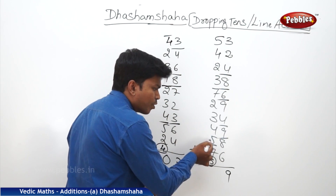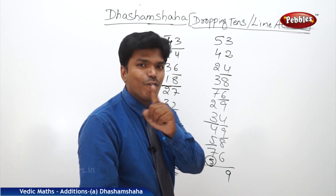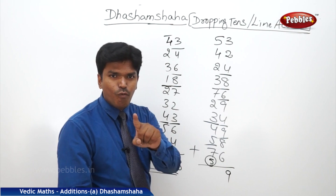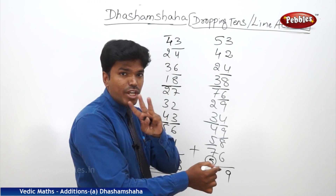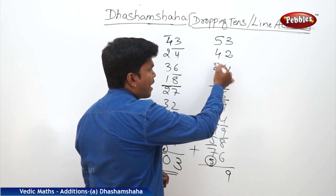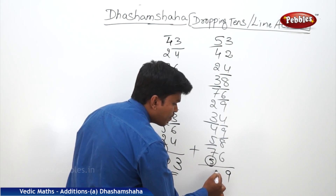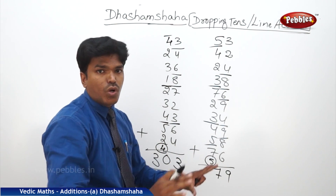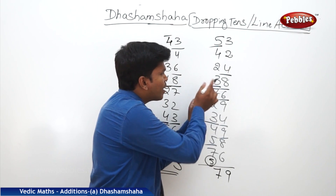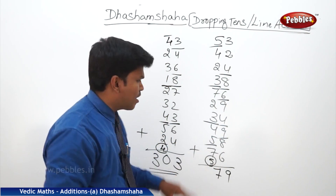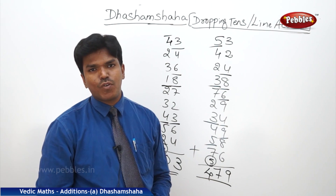Continuing: 5, 7 → 2. 2, 5 → 7. 7, 4 → 1 (drop 10). 1 plus 3? 4. 4, 2 → 6. 6, 7 → 3 (drop 10). 3, 3 → 6. 6, 2 → 8. 8, 4 → 2 (drop 10). 2, 2 → 4 (drop 10). Lastly remaining is 7. Write 7 here. Count the tens: 2 plus 2? 4. So the answer is 479.